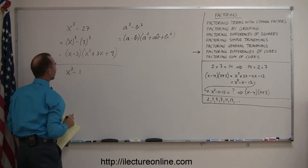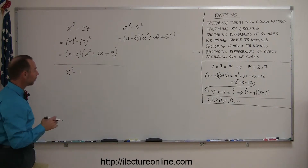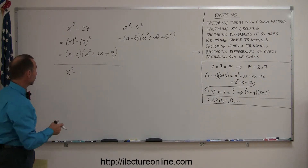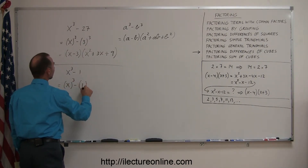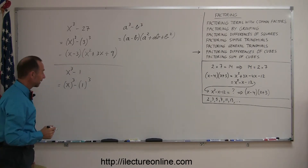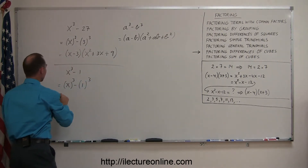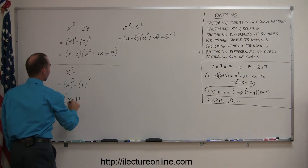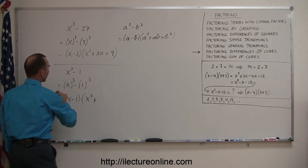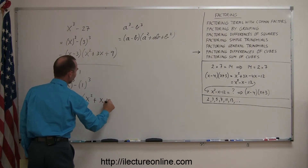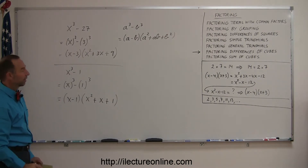How about x cubed minus 1? That doesn't look like the difference of cubes until you realize 1 can be written as 1 cubed. So this is the first term cubed minus 1 cubed. Applying the rule, this equals x minus 1, times x squared plus 1 times x — which is just x — plus 1 squared, which is 1. So the factored form is x minus 1 times x squared plus x plus 1.